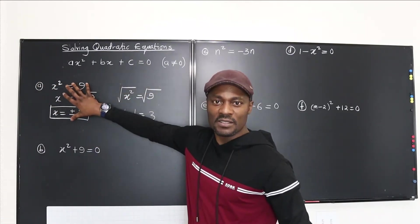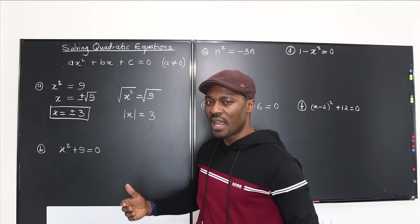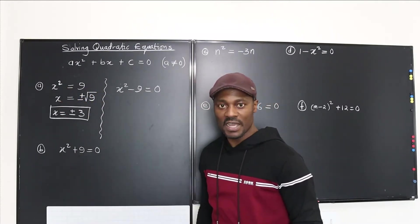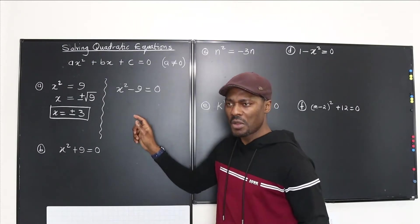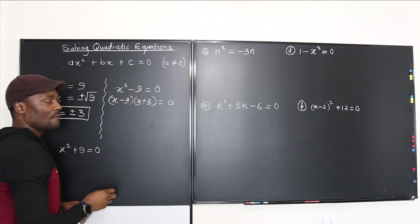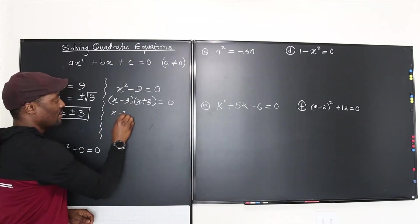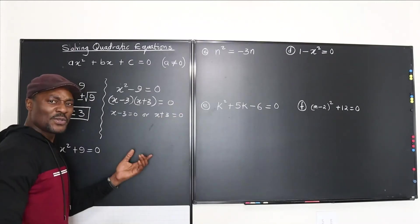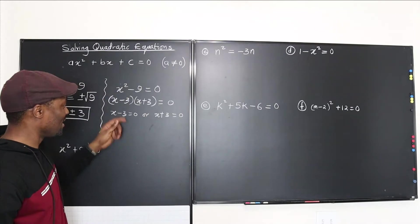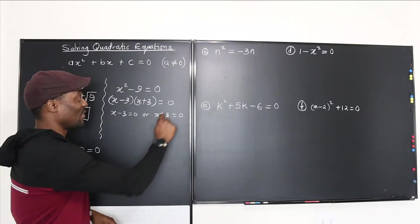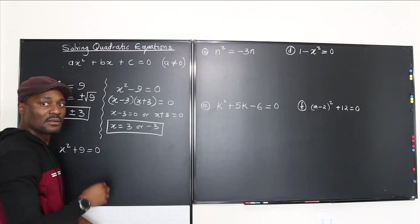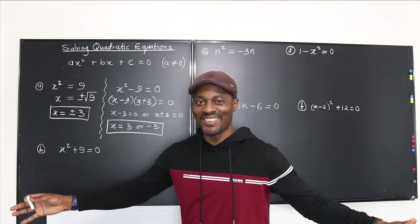There's a different way to solve x² = 9: treat it as a difference of two squares. Rewrite it as x² − 9 = 0, then factor to get (x − 3)(x + 3) = 0. Since the product equals zero, either x − 3 = 0 or x + 3 = 0, giving x = 3 or x = −3 — the same answer as before. The square root method is the shorthand; factoring is the expanded form.